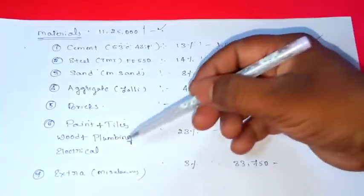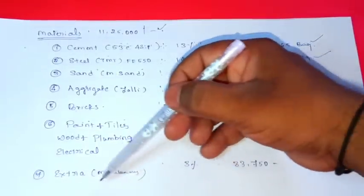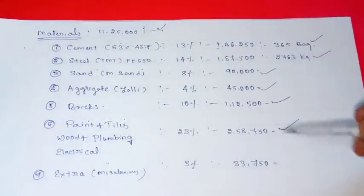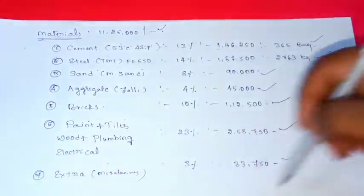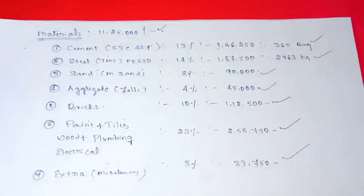This is miscellaneous, this is extra. This is 33,400. So this is a screenshot. This is not included.